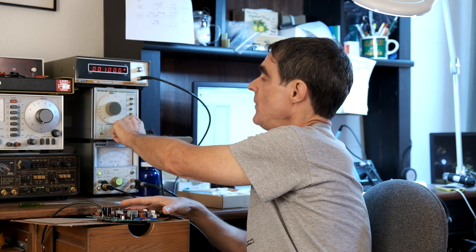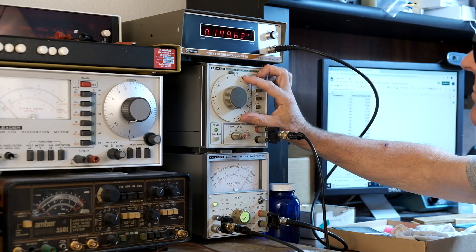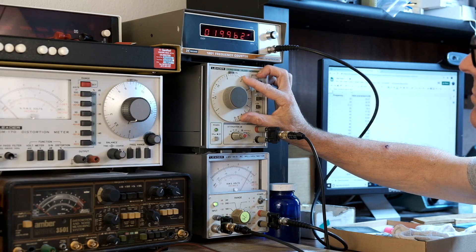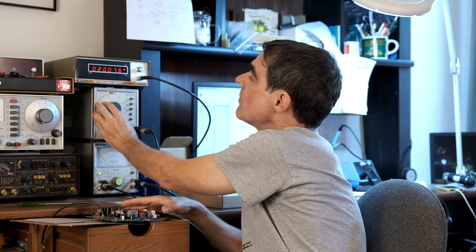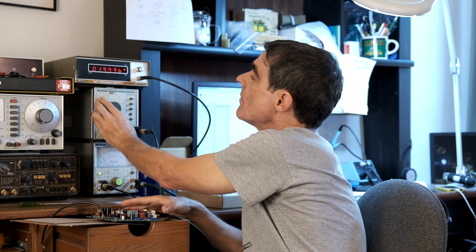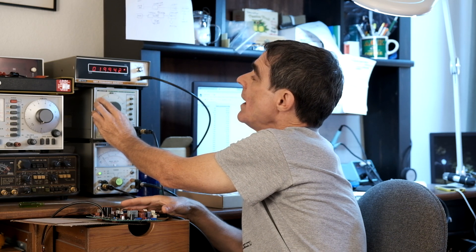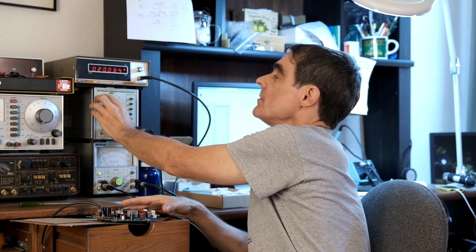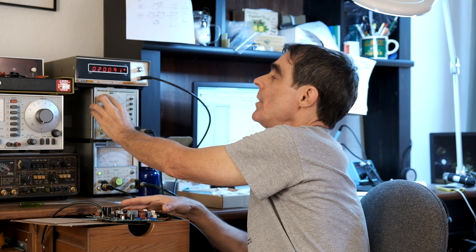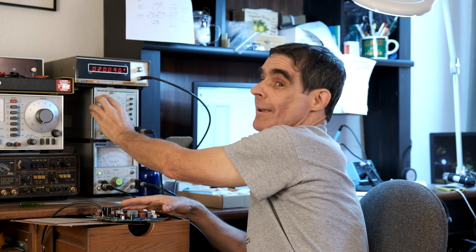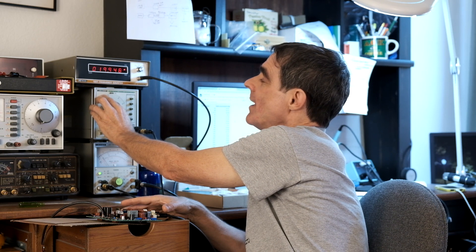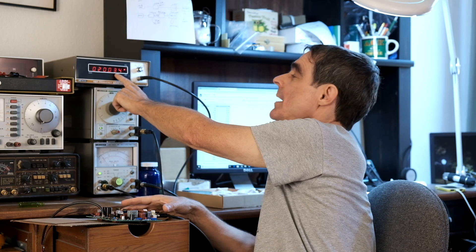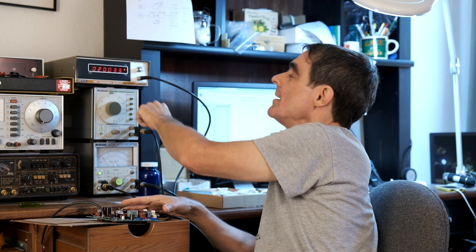So I'm going to switch my function generator to 20 kilohertz. And there we are at 20 kilohertz. A little bit higher than that. 20.91. This is analog gear so it's a bit touchy. And so there we go. So we're at 20.03 kilohertz.